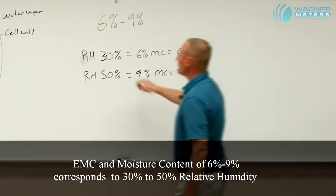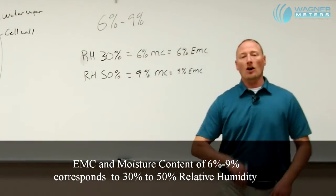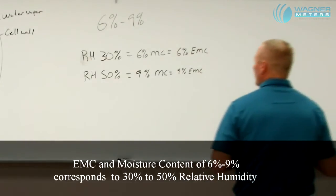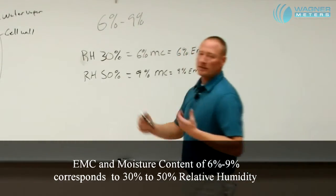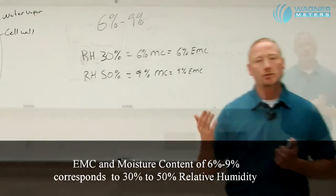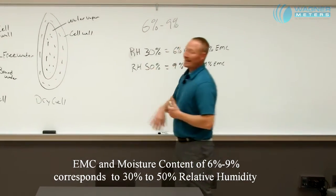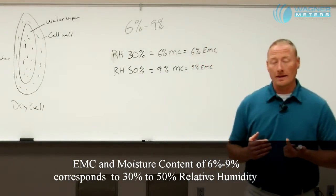These relative humidities of 30 to 50 percent are the average relative humidity of a climate controlled indoor facility - inside your house, inside your office, not exterior relative humidity. Relative humidity outside can range much higher or much lower than that.